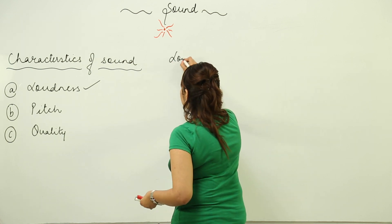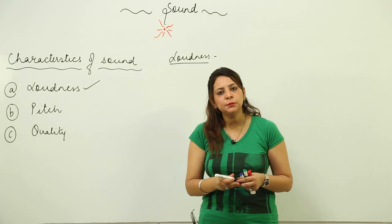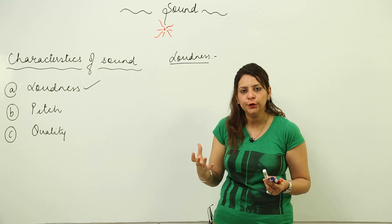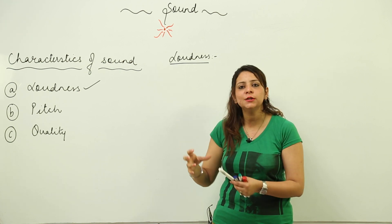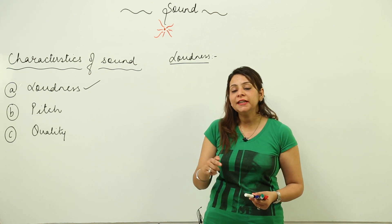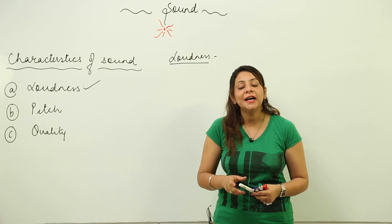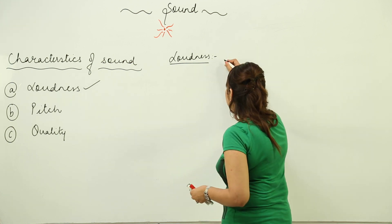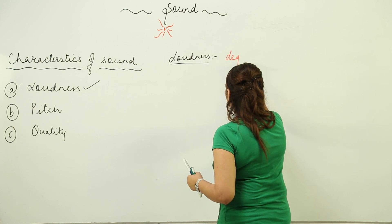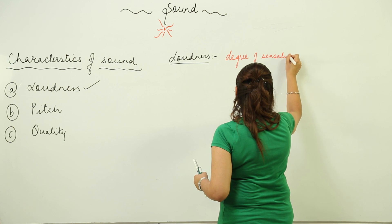What is loudness? Sometimes when somebody speaks with you, the sound appears to be loud — you can hear it at a high volume — and sometimes you hear very slowly and you ask your friend to repeat what they are saying because you are unable to hear. In that case, the sound is of low volume. That is what loudness is — it is the degree of sensation of sound.